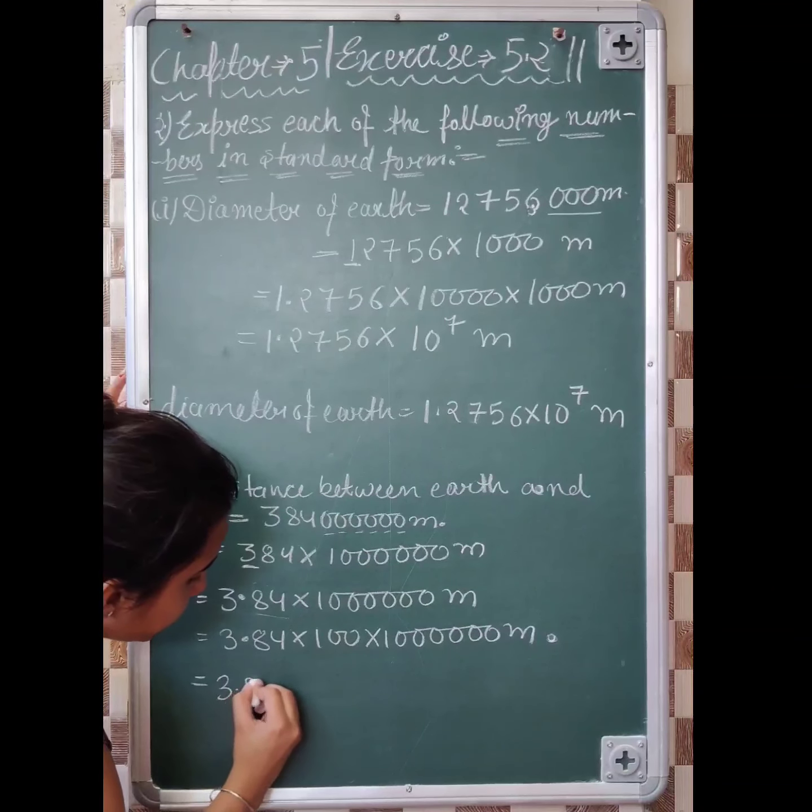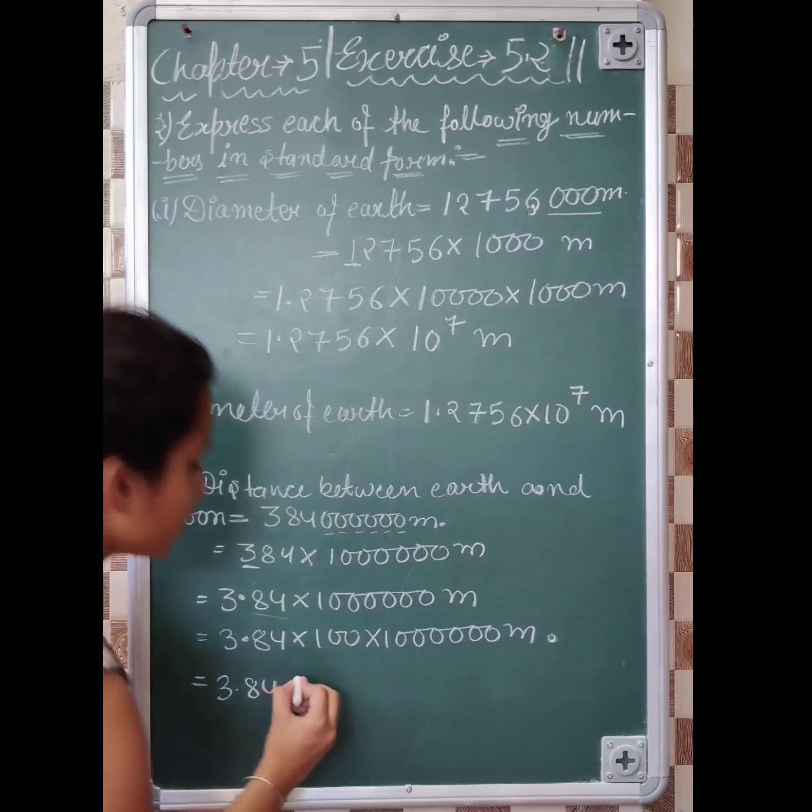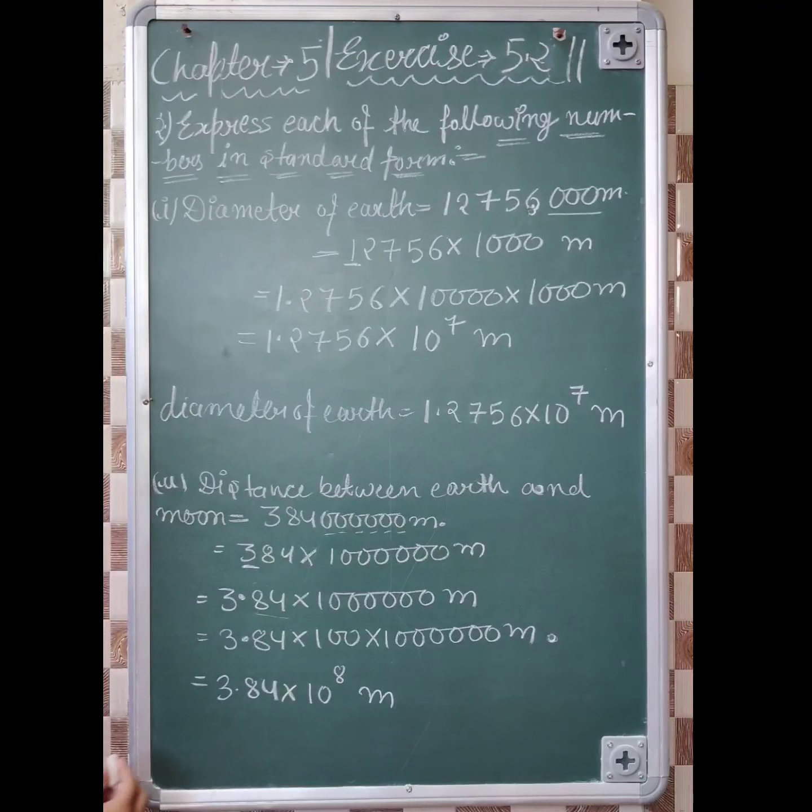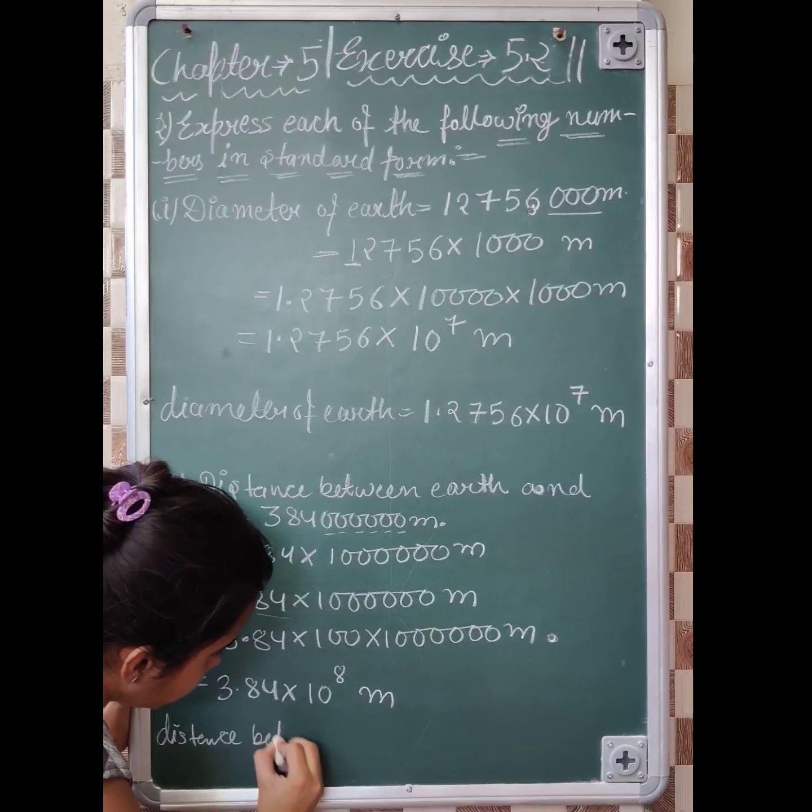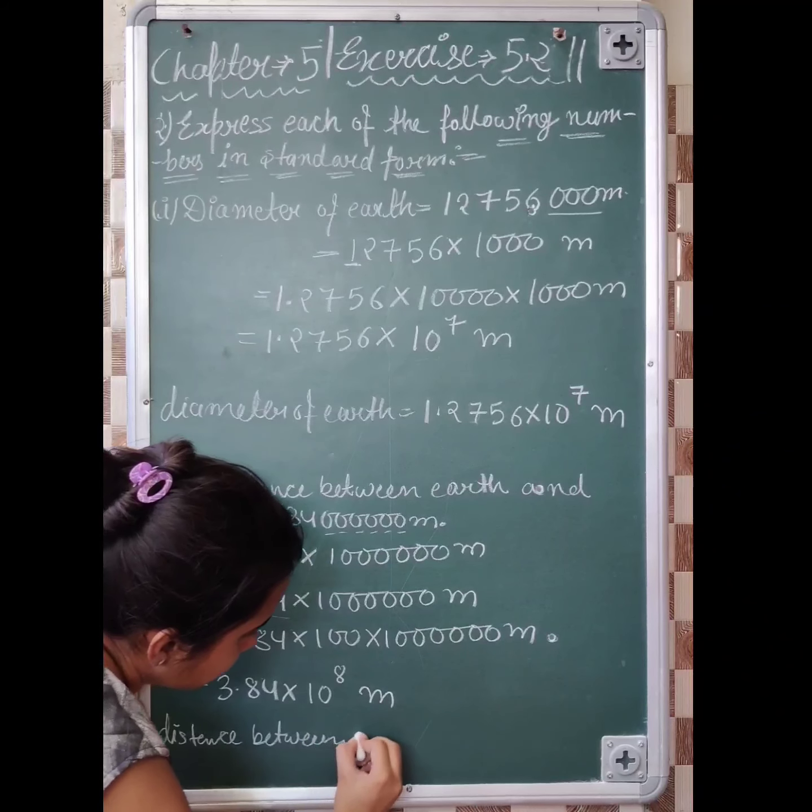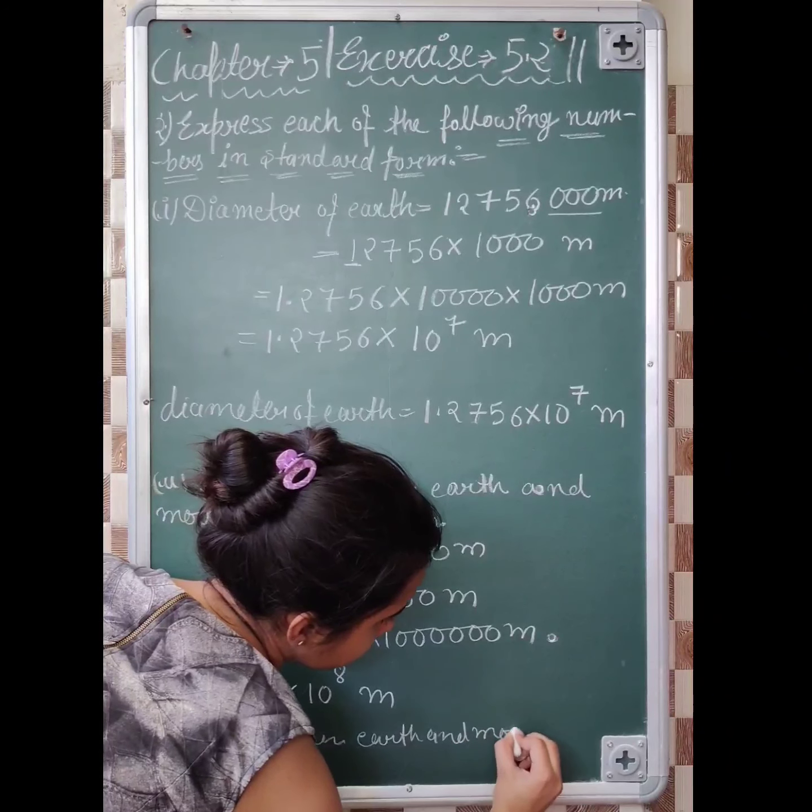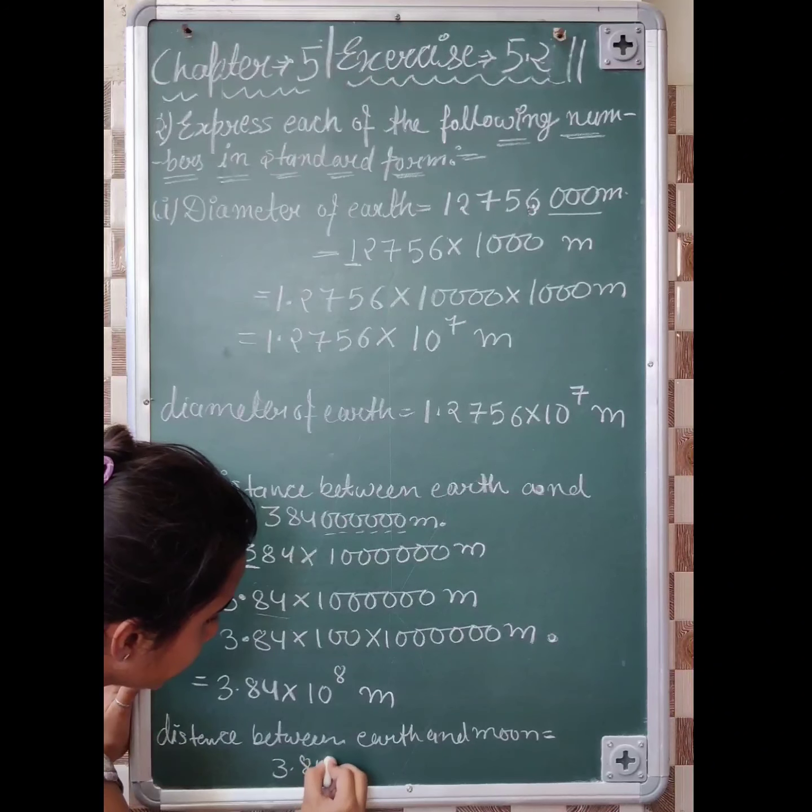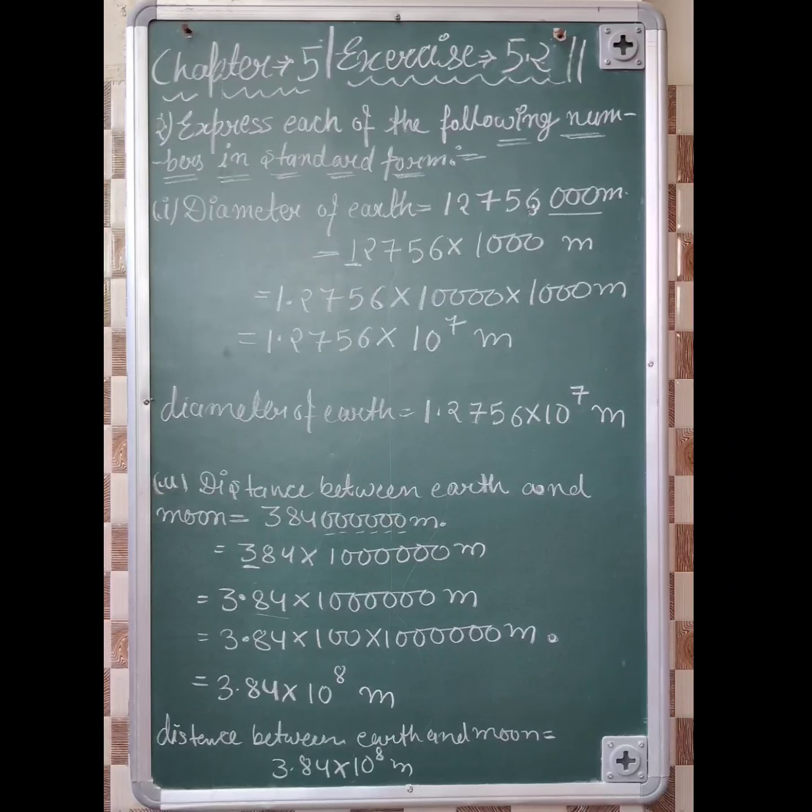Next, 3.084 into 8 zeros. It means 10 raised to the power 8 meters. So what is the distance between Earth and Moon? Is equal to 3.084 into 10 raised to the power 8 meters.